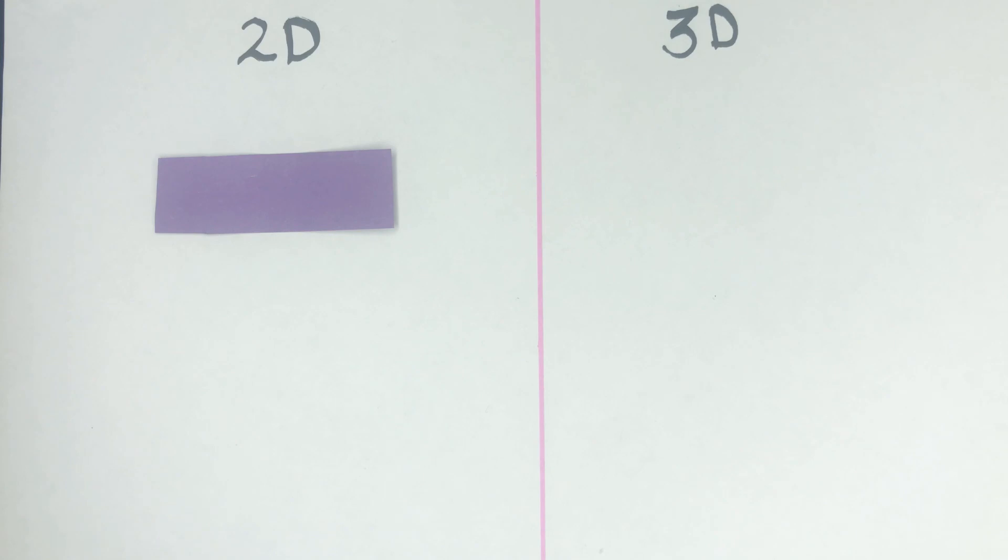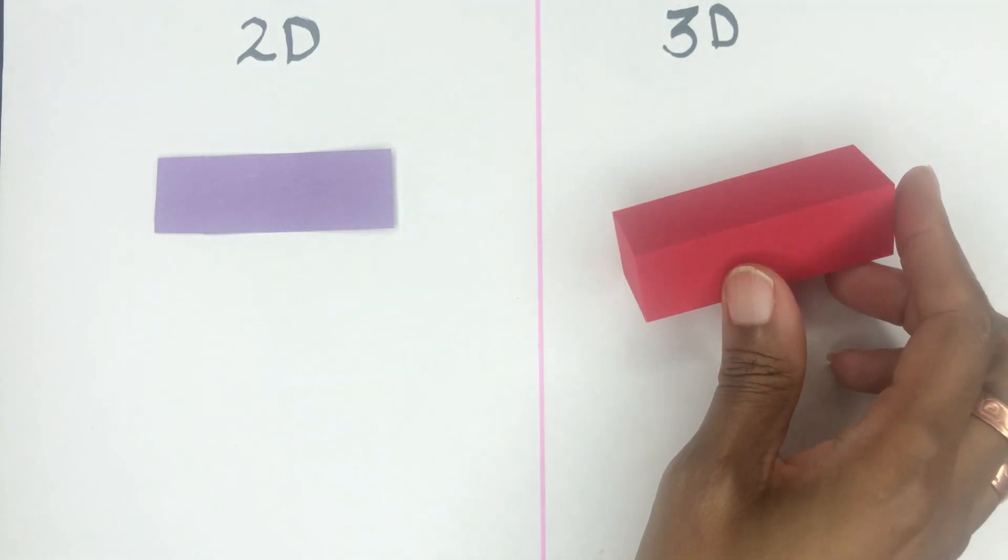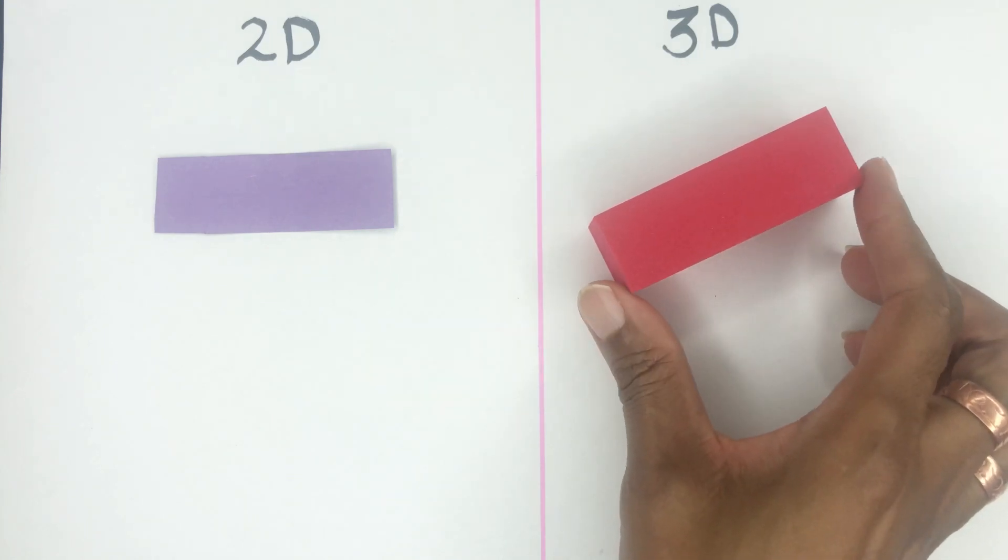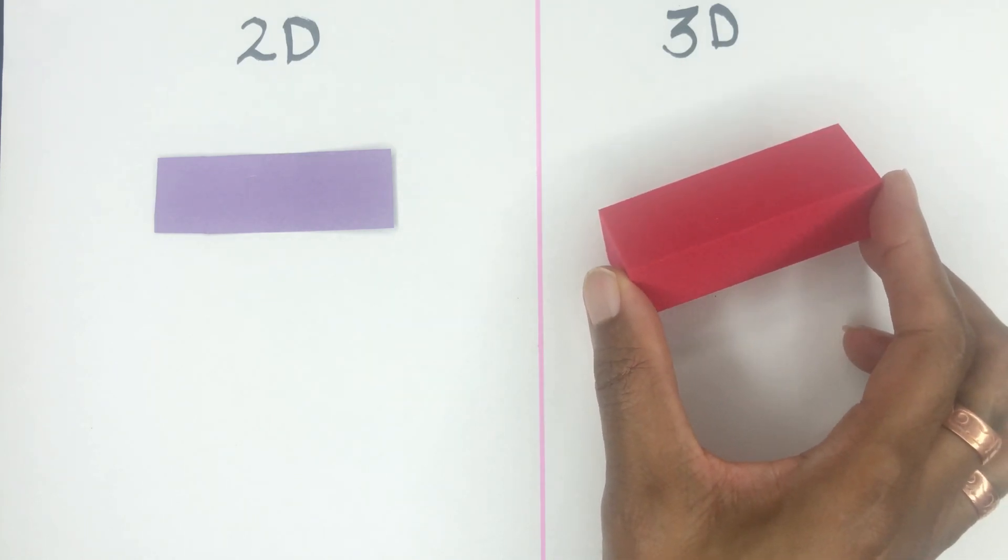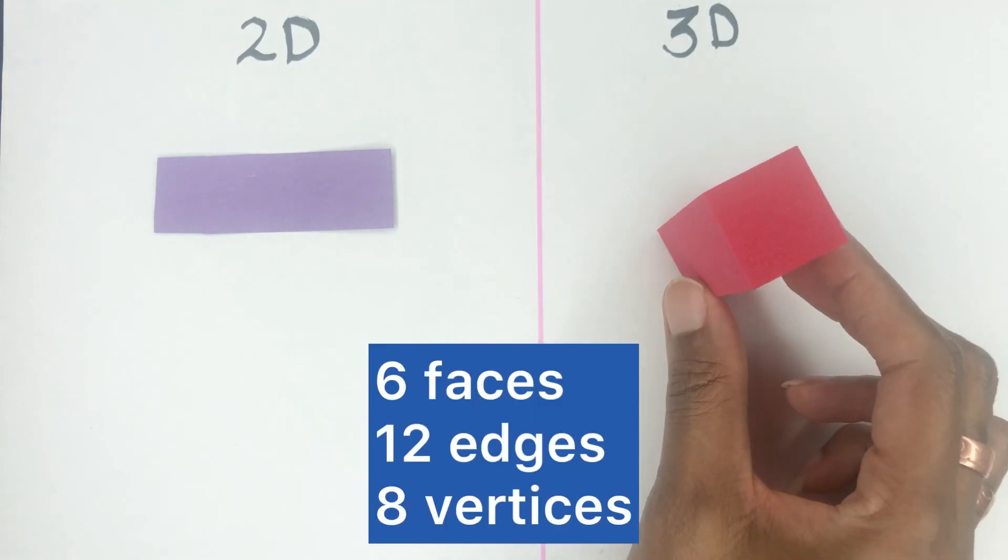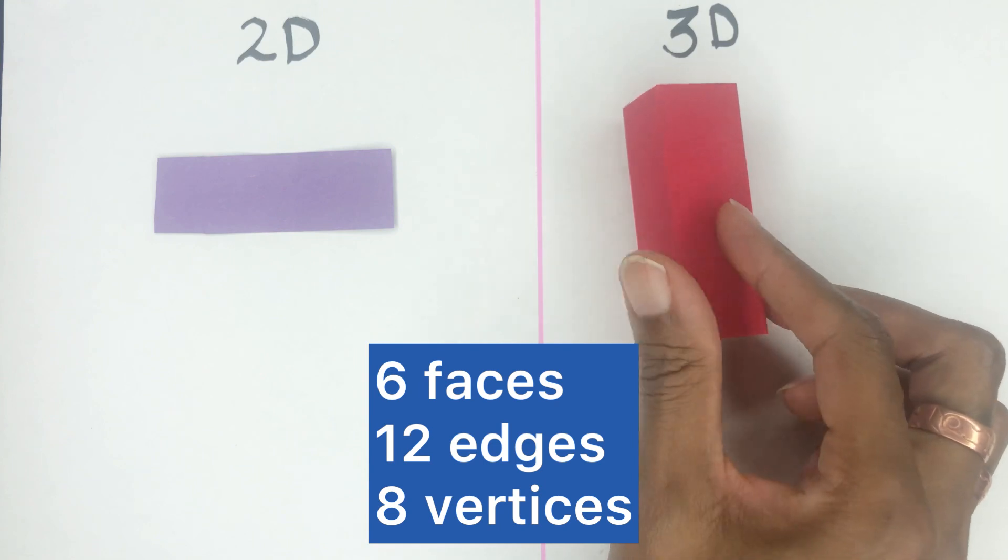A rectangle. Three-dimensional, it's called a cuboid or a rectangular prism. What are the properties of that? It has six faces, 12 edges, and eight vertices.